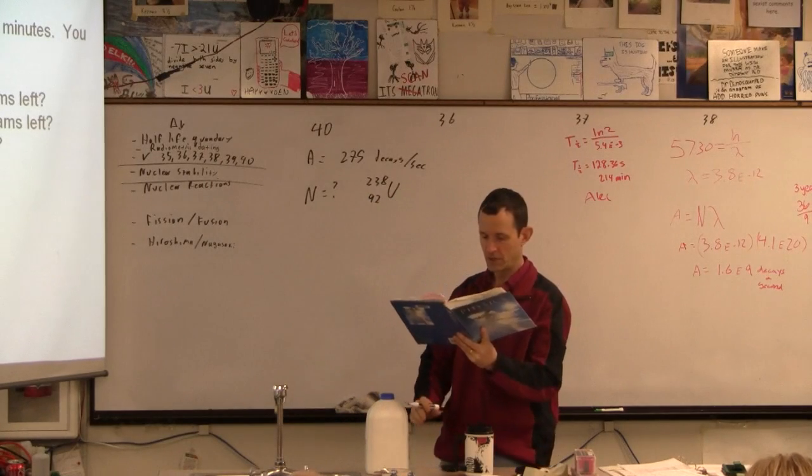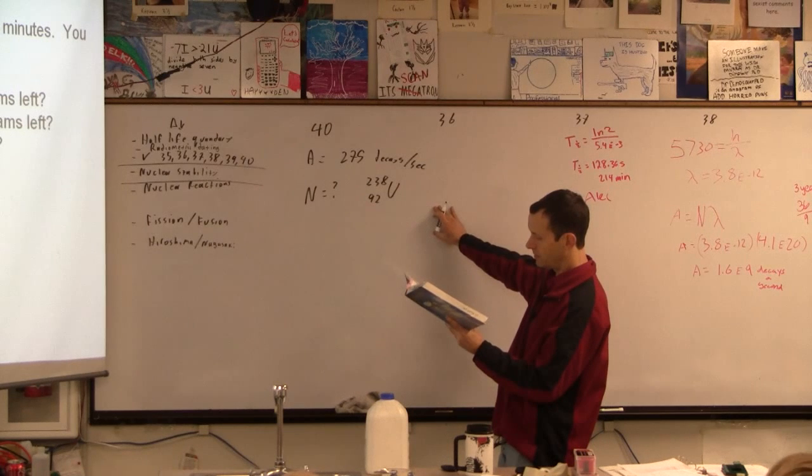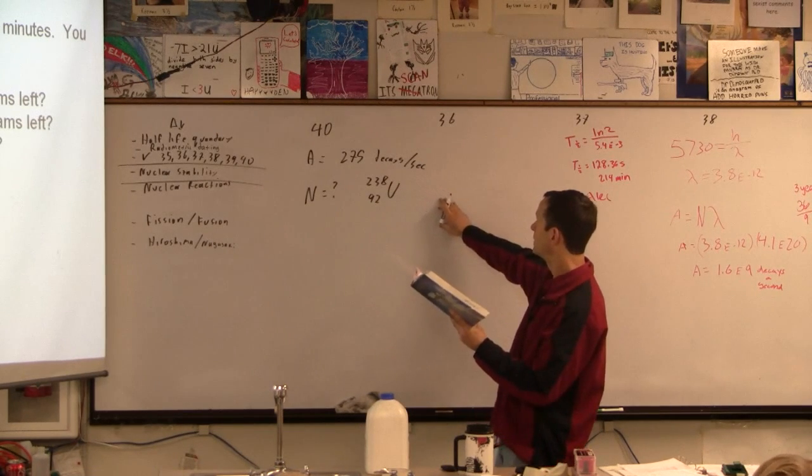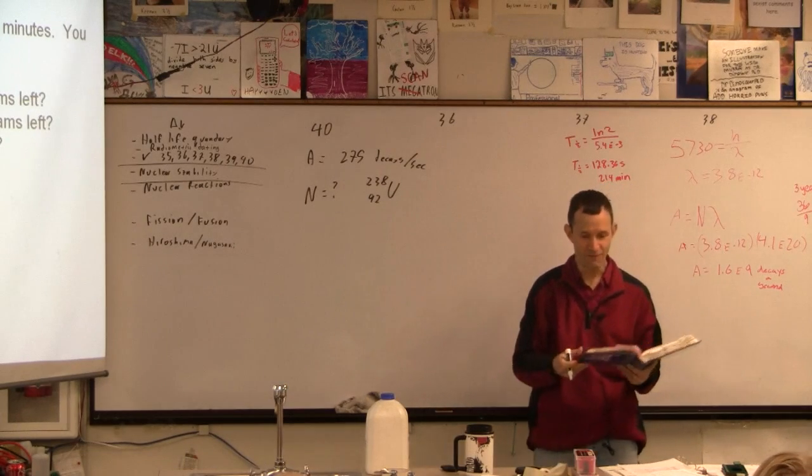This is problem 40 from chapter 30. How many nuclei of uranium-238 remain in a rock if the activity registers 275 decays per second? What are we going to need to know about uranium-238? Its half-life.